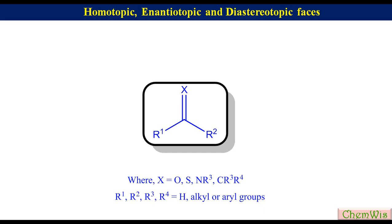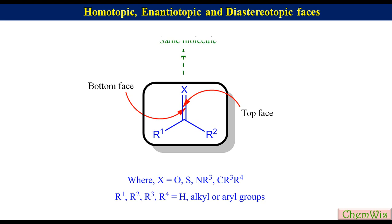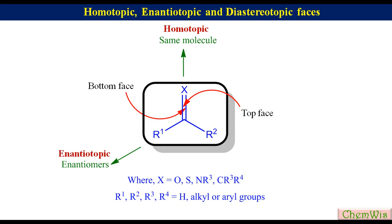The double bond has two faces for the attack by a reagent: top face and bottom face. If two products formed by the attack of a reagent from the top face and bottom face are the same, then the two faces are called homotopic. If the two products are enantiomers, then these two faces are called enantiotopic. If the two products are diastereomers, then the two faces are called diastereotopic faces.